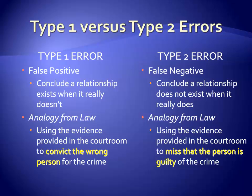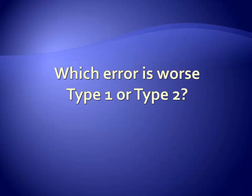An analogy from law is provided here that may help you differentiate between these two concepts. In the case of a false positive, you would use the evidence provided in the courtroom to falsely convict someone, whereas for a false negative, you would use the evidence to falsely state that the person is not guilty, hence missing their guilt. Another analogy is thinking of a false positive as getting on the wrong plane, whereas a false negative is similar to missing your flight. Take a moment to think about which error would be worse: having a conclusion be a false positive or a false negative.